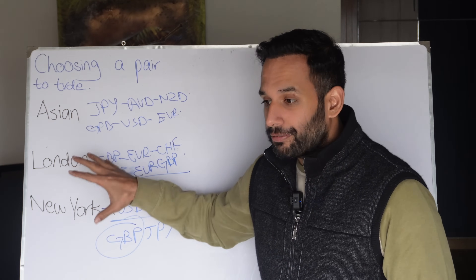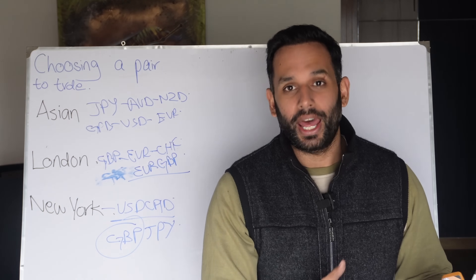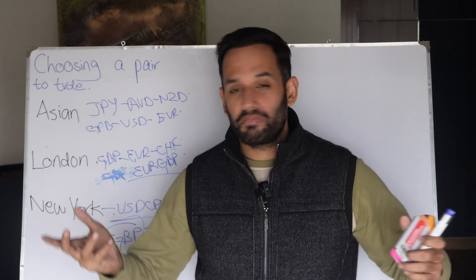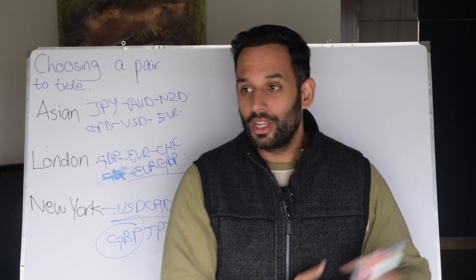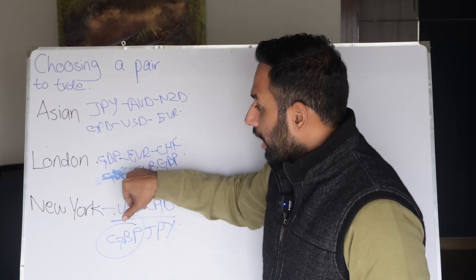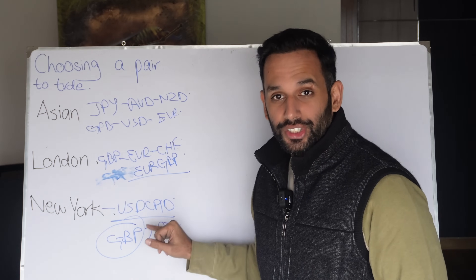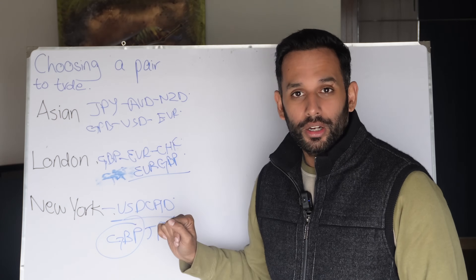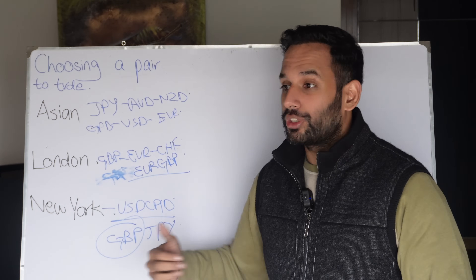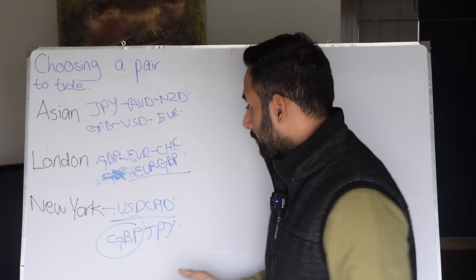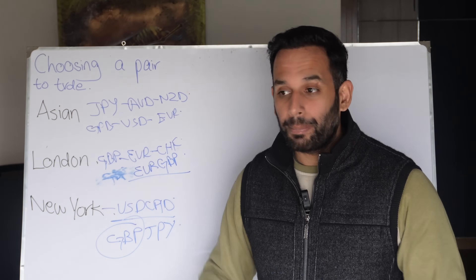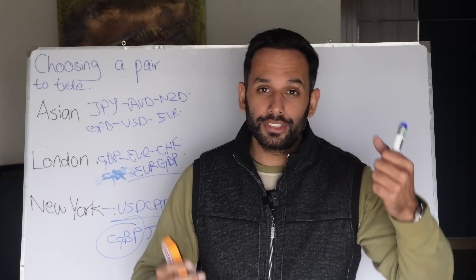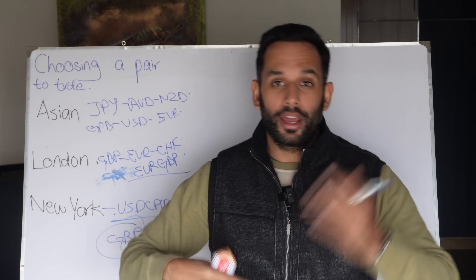Whenever you're looking at a currency pair, first identify what session you're trading in. For example, if you're in the London session and looking at pound USD, it should be easier to trade because pound USD is only being influenced by the pound. But if you're looking at euro GBP or pound Swiss, you need one currency really weak and one really strong for it to move.